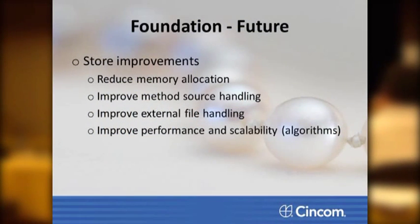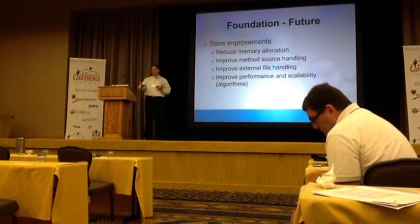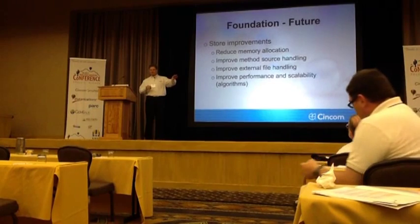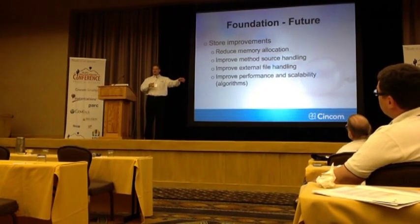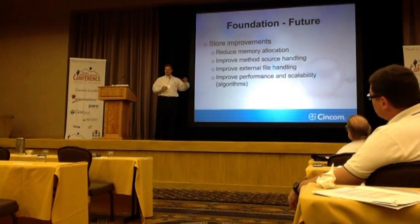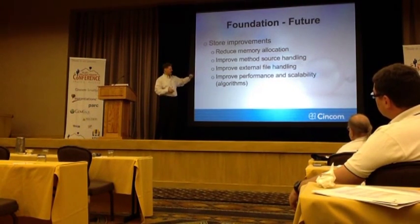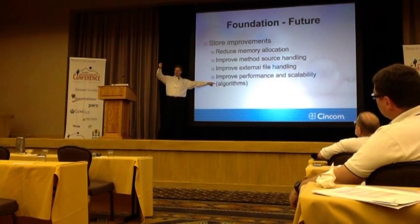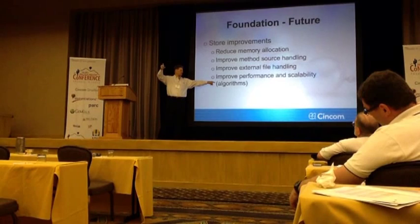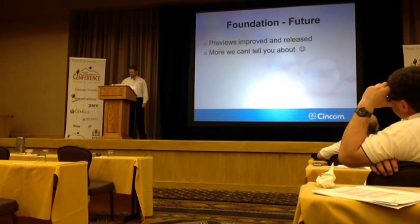In the future, some Store improvements we're working on now include reducing memory allocation and improving performance for customers who use Store in atypical but valid ways — pushing it to the limits. For example, some customers want to use one source code management system, use Store, and attach lots of files. Comparing those can work slowly, so we're improving the algorithms. We've made a lot of improvements in the database queries, but there are a number of places where we can make significant further improvements and we are working on that.